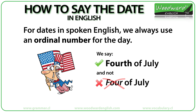How to say the date in English. For dates in spoken English we always use an ordinal number for the day. We say the 4th of July, and not 4 of July.